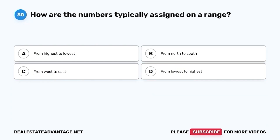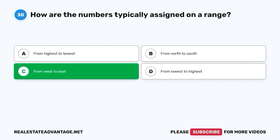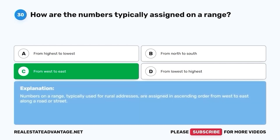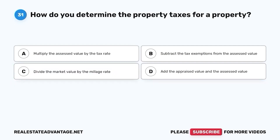Question 30. How are the numbers typically assigned on a range? A. From highest to lowest. B. From north to south. C. From west to east. D. From lowest to highest. The correct answer is C. From west to east. Numbers on a range, typically used for rural addresses, are assigned in ascending order from west to east along a road or street.